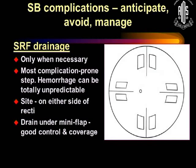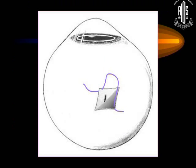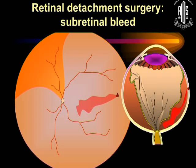SRF drainage is the most complication-fraught step in buckling surgery. Hemorrhage can occur and be totally unpredictable. Stick to drainage sites on either side of the recti if possible, within the watershed zones between the vortex veins. I like to use a mini flap because it gives very controlled drainage — you get thinner sclera there, make an incision, drain, and then close the mini flap at the end.